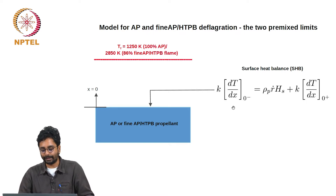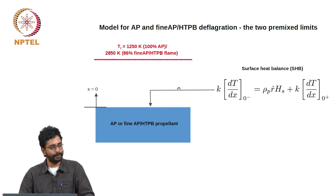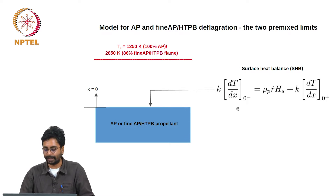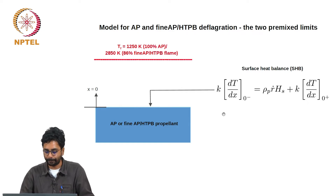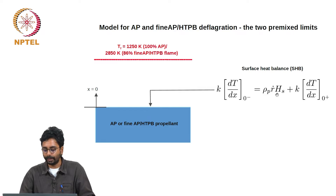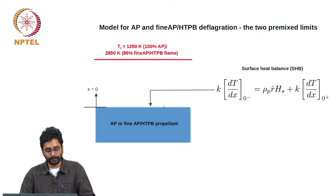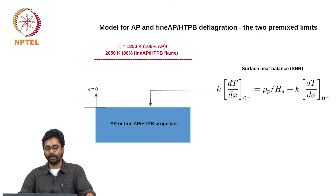The heat flux balance simply says that the heat received from the flame — part of it causes decomposition at the surface and the other part goes into the condensed phase. This is just an expression of energy conservation at a thin surface. The left-hand side is the flux that goes into the surface. The first term on the right-hand side is the energy or enthalpy change associated with the decomposition at the surface, and K dT/dx at 0-plus is the heat flux that comes from the gas phase into the surface.